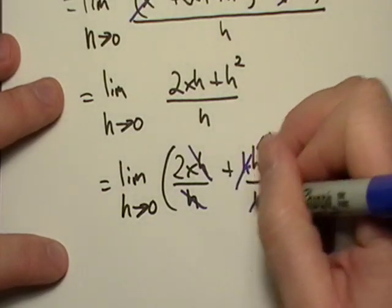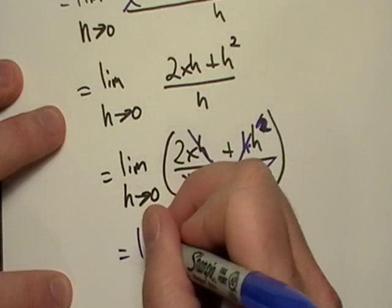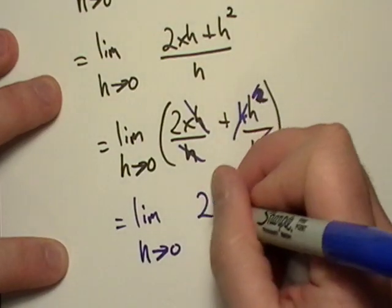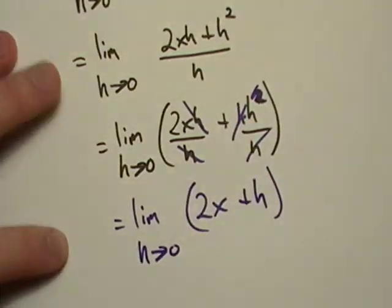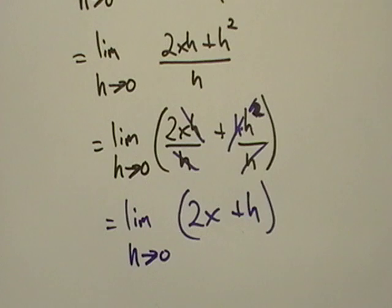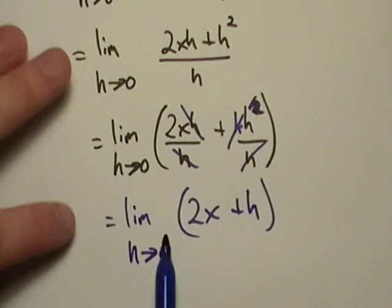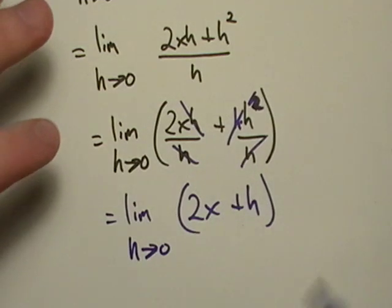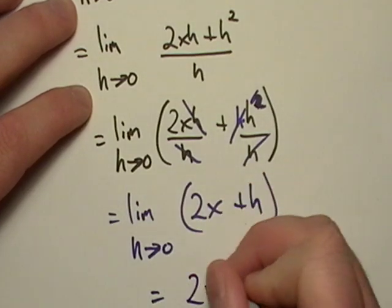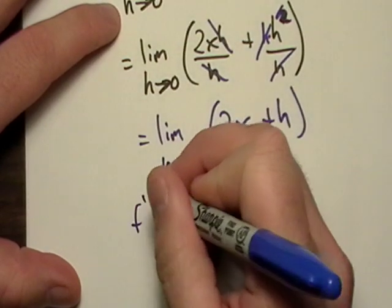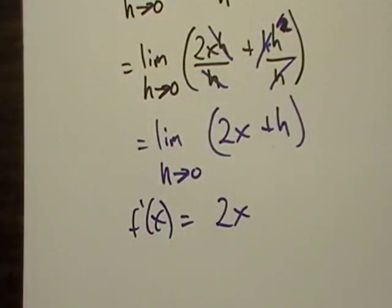So then we're left with the limit as h goes to zero of two x plus h. Remember, you have to put parentheses around or rewrite the limit. Now it looks like we can take this limit — we can go ahead and shrink h down to nothing without doing any damage. So we end up with two x. So what we say is f prime of x equals two x. That's the notation for derivative for right now, and there are a couple other ones we'll get into.